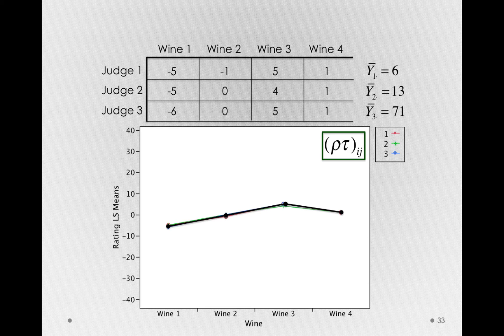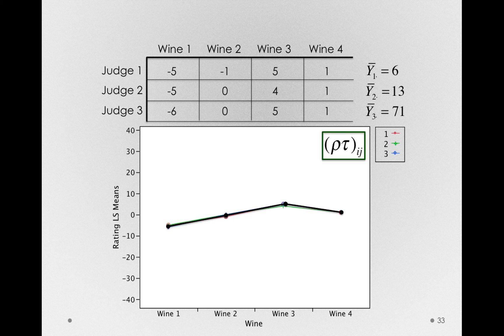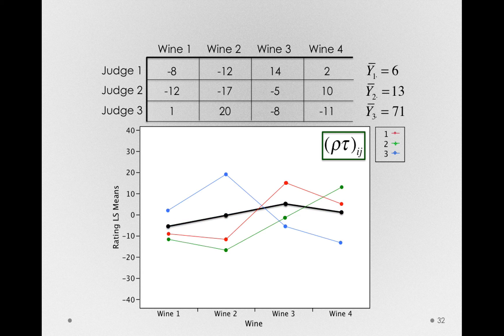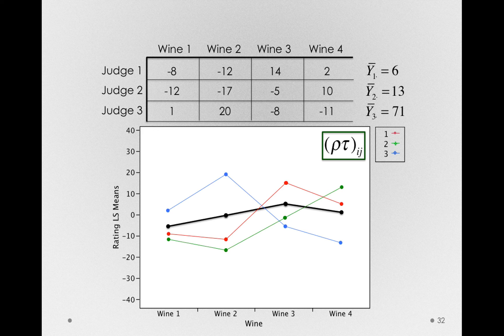So if that interaction is small, if the effect of wine doesn't depend on which judge is making the ratings, then we have evidence for a stable effect. However, in the other case, when the effect of wine depends greatly on who is making the rating, that would give us no indication that the effect of wine is stable.